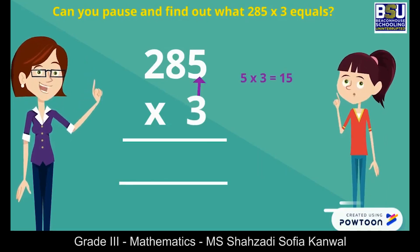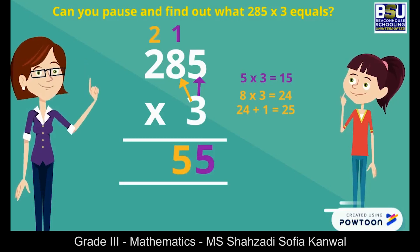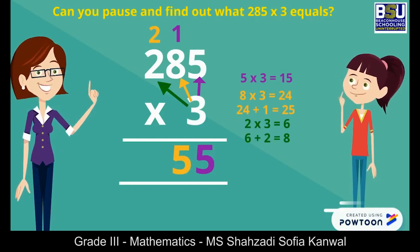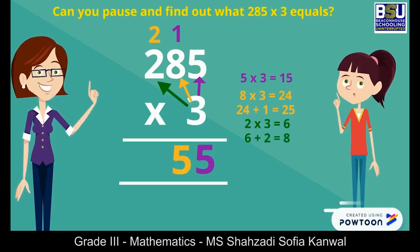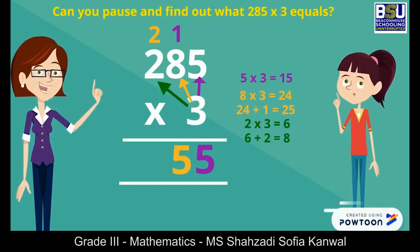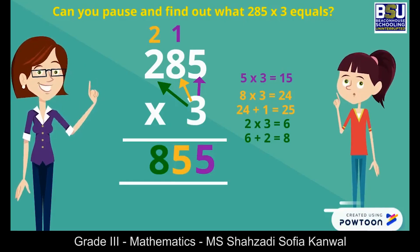5 multiplied by 3 is 15. We write 5 and carry 1. 8 multiplied by 3 is 24. We add the 1 carry to get 25. We write 5 and carry 2. Finally 2 multiplied by 3 is 6. We add the 2 carry to get 8 and write it. The answer is 855.